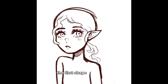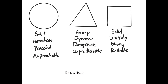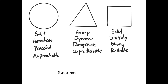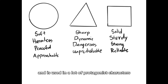The first shape is the circle, and what it represents is soft, harmless, peaceful, and approachable. So if you want your character to convey these qualities, then use the circle shape. Characters with primarily circle shapes in their designs can be innocent or graceful, and it is used in a lot of protagonist characters.